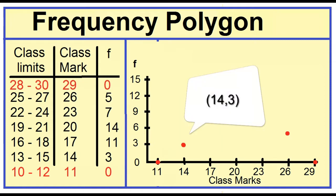Next is 14, 3. Then 17, 11. Then 20, 14. Then 23, 7. Then 26, 5. Then 29, 0. Sixth, join the consecutive dots with straight lines.